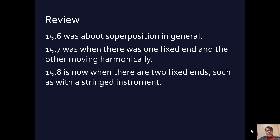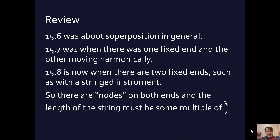This section is now about when you have two fixed ends, such as if you're playing a violin, a cello, or a piano. You have two fixed ends, as with stringed instruments. Accordingly, there are going to be nodes, or zeros, at both ends of the string.